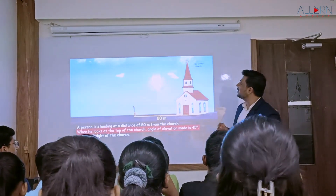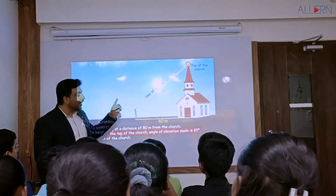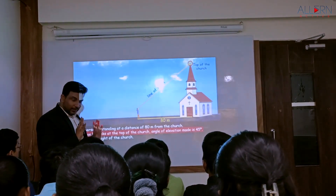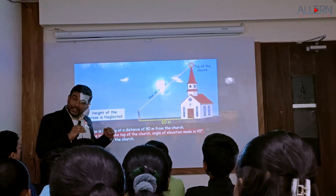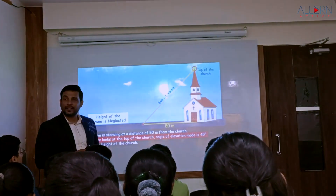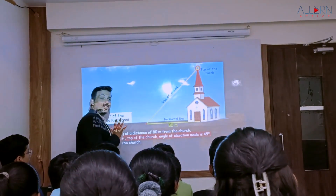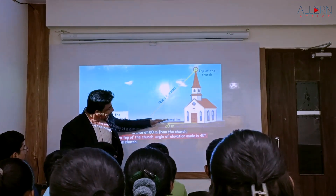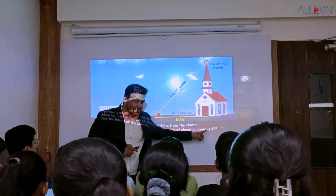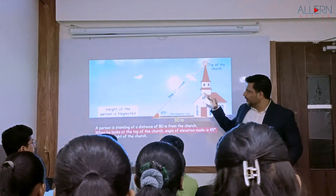The top of the church is the object. The moment an observer observes an object, the person is a point on the ground and this line itself will act as a horizontal line. So now we have a line of vision which is making an angle with the horizontal line, and this angle is nothing but the angle of elevation. What is the angle of elevation given to us? The angle of elevation is given - we understood this part and that is what we could draw.